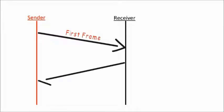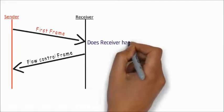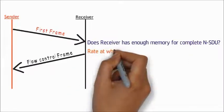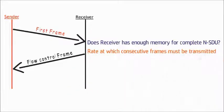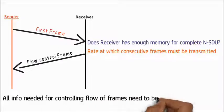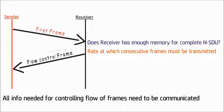In a multi-frame communication initiated by a sender with a first frame, the receiver needs to tell how the flow of consecutive frames need to be sent to the receiver. There are various parameters to be considered like does the receiver has enough memory space to accommodate complete NSDU, at what rate the consecutive frames has to be sent, etc. All these informations regarding controlling of the flow of frames needs to be communicated to the sender by the receiver, hence the flow control frame.